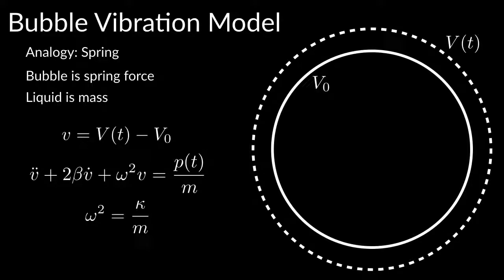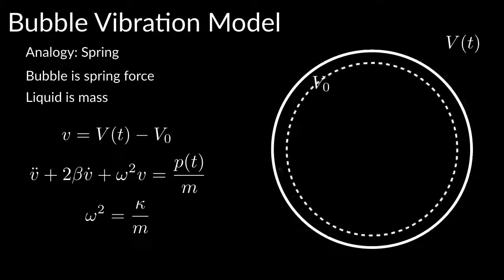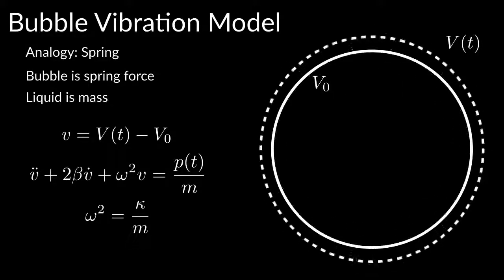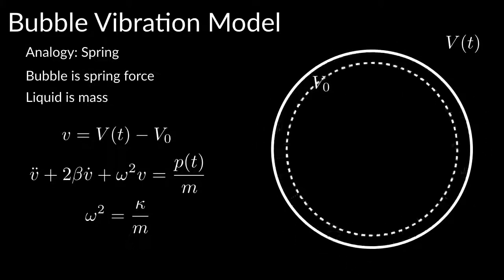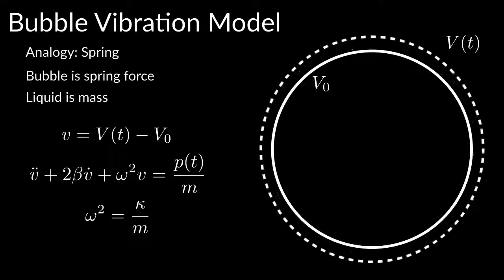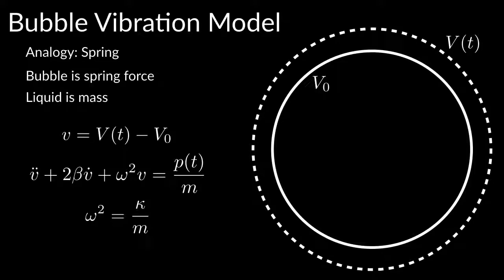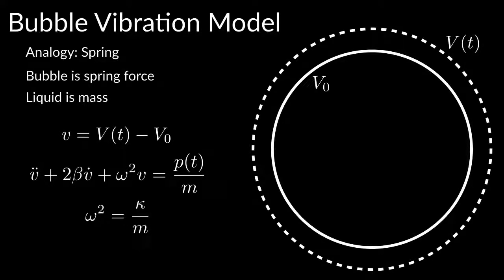The volume oscillations of a bubble can be modeled as a damped harmonic oscillator, i.e. a spring. The internal gas of the bubble and the surface tension at its wall provide the restoring force, while the surrounding liquid is the mass. The frequency of the oscillator, omega, depends on the stiffness and the mass.